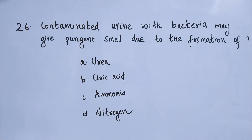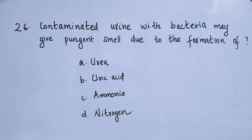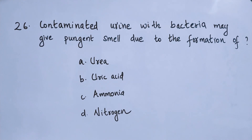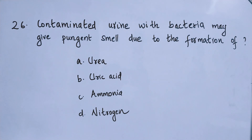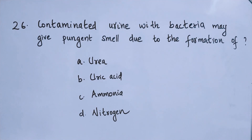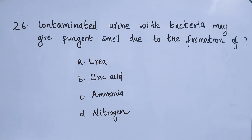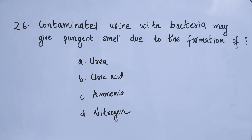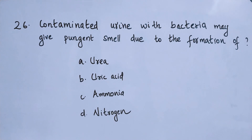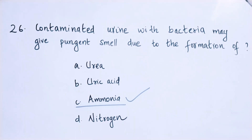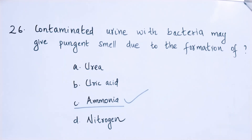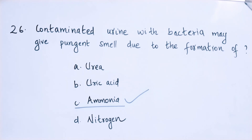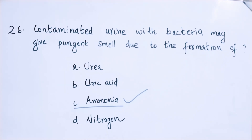Question number 26: Contaminated urine with bacteria may give a pungent smell due to the formation of option A: urea, option B: uric acid, option C: ammonia, option D: nitrogen. The right answer is option C — ammonia. Contaminated urine with bacteria may give a pungent smell due to the formation of ammonia.